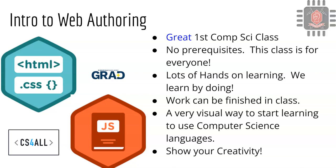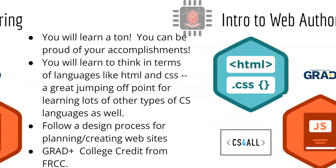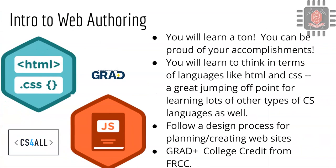Starting with Intro to Web Authoring — this is a great first computer science class. There are no prerequisites. This class is for everyone. CS for all is kind of the tagline for a lot of the classes that we have here at Fairview. There is a ton of hands-on learning in this class. In all of the computer science classes, we learn by doing. In this class in particular, you should be able to finish your work in class as long as you're there. You'll be really proud of your accomplishments when you finish the class.